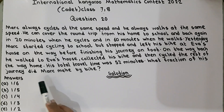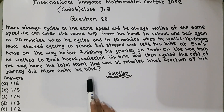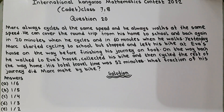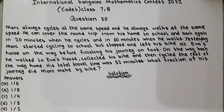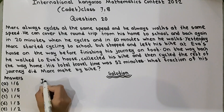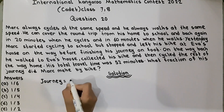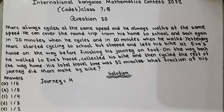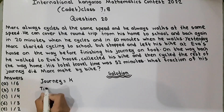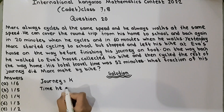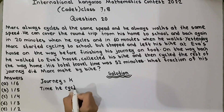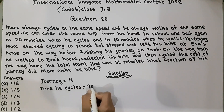Journey by bike plus journey by foot is equal to 52 minutes, and we have to find the journey made by bike. We take the journey as a variable — let's call it K. The time he cycles is equal to 20K.